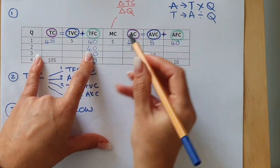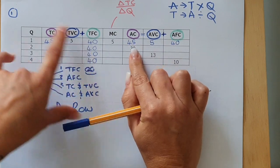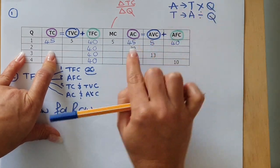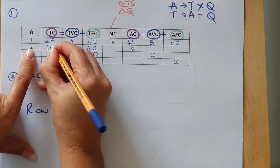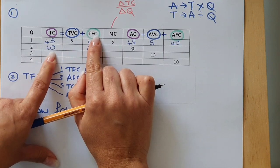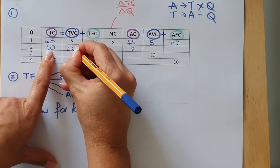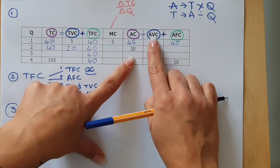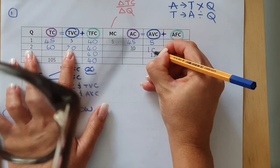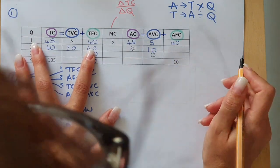For row 2, you have Total Fixed Cost of 40. The value given in this row is 30 for Average Cost. Average Cost's pair is Total Cost — you have an average and want the total, so multiply: 30 times 2 is 60. Can you get Total Variable Cost? Total Cost is the sum of variable and fixed cost, so: what plus 40 gives 60? That's 20. Leave Marginal Cost for now. Average Variable Cost: 20 divided by 2 is 10. Average Fixed Cost: 40 divided by 2 is 20.